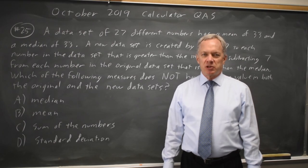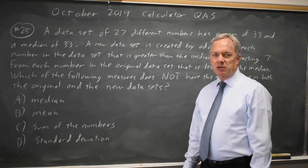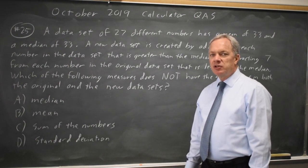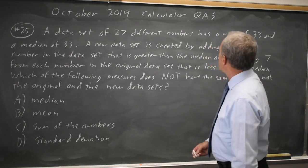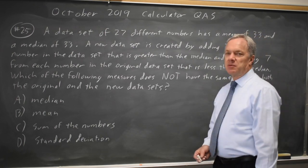This is question 25. College Board is asking about changes in the mean, median, some of the numbers, and standard deviation if you change the numbers in a data set. We have 27 different numbers with a mean of 33 and a median of 33.